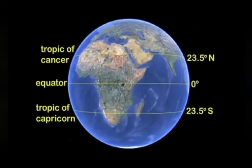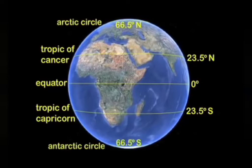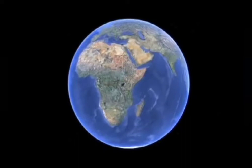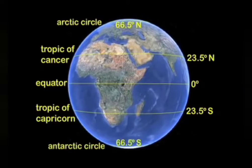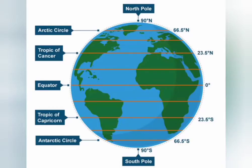The Arctic Circle and the Tropic of Cancer are the special latitudes in the Northern Hemisphere. They are situated at 66.5° North and 23.5° North respectively. On the other hand, the Antarctic Circle and the Tropic of Capricorn are the special latitudes in the Southern Hemisphere, situated at 66.5° South and 23.5° South respectively.